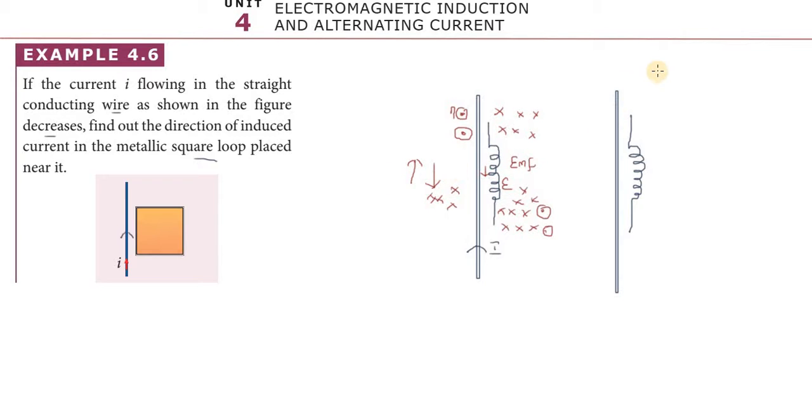We are going to change the current. EMF is induced anti-clockwise. When current decreases, the magnetic field strength decreases. This induces an EMF in the current.